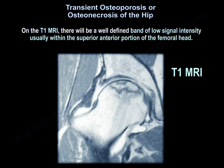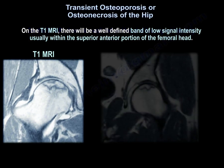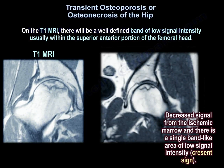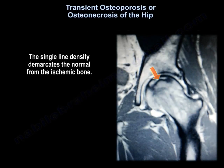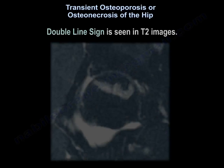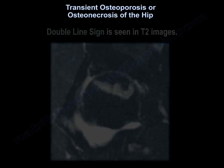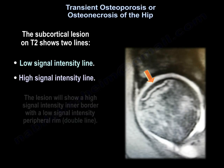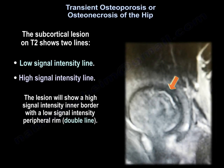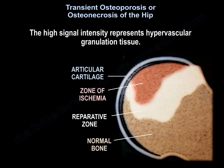On the T1 MRI, there will be a well-defined band of low signal intensity, usually within the superior anterior portion of the femoral head, with decreased signal from the ischemic marrow and a band-like area of low signal intensity — the crescent sign. The crescent sign represents the reactive interface between the necrotic and the reparative zone. The single line density demarcates the normal from the ischemic bone, and the double line sign will be seen on T2 images. The subcortical lesion on T2 shows two lines: a low signal intensity line and a high signal intensity line. The lesion shows a high signal intensity inner border with a low signal intensity peripheral rim. The high signal intensity represents hypervascular granulation tissue.